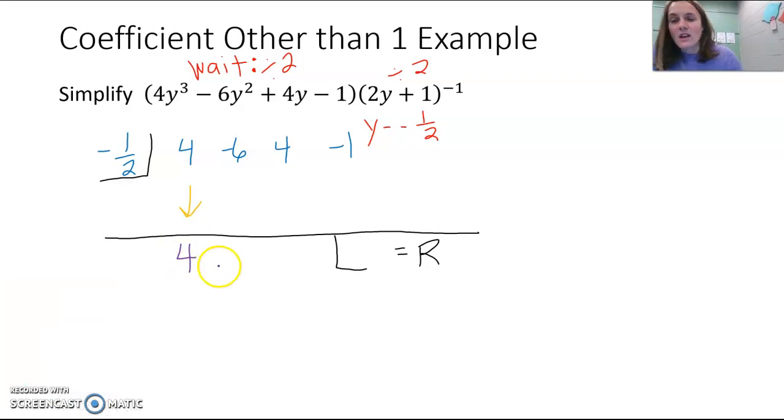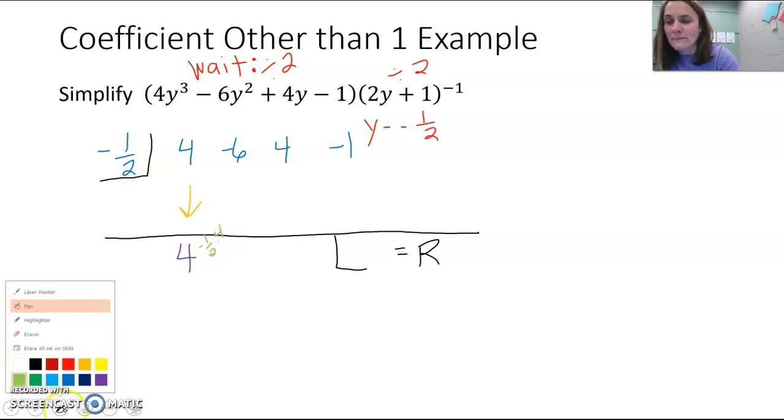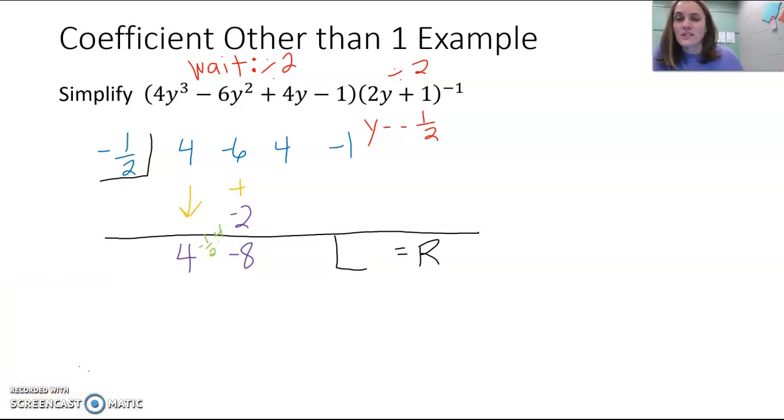We bring our 4 down. Then we take our divisor, the negative 1 half, and we multiply it times 4. So we're going to take negative 1 half times 4, and when we do that, negative 1 half times 4 is negative 2. Go ahead and add negative 6 plus negative 2. Add those two together, and you get negative 8.